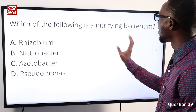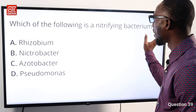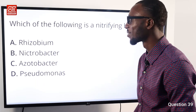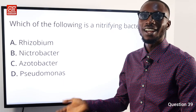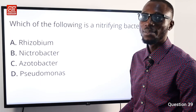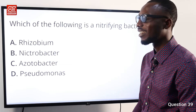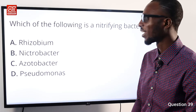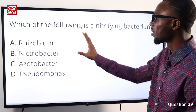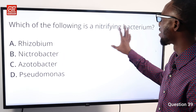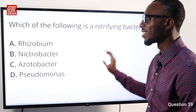Question 39: Which of the following is a nitrifying bacterium — one that fixes nitrogen back to the soil by converting ammonia to nitrates? Examples are Nitrobacter, Nitrosomonas, and Nitrosococcus. Going through the options, option B — Nitrobacter — is a nitrifying bacterium. So option B is very correct.